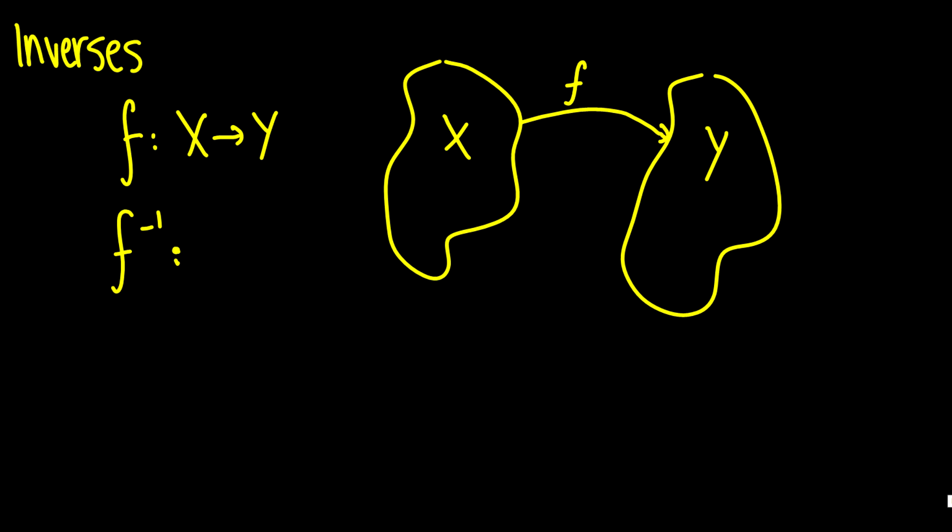But that's not quite all for this lecture. We're going to talk about inverses. This is going to be really quick. Basically, if we have a function that maps x to y, then the inverse function just maps all the elements in y back to some element in x. And you are required to have bijective functions to do this.